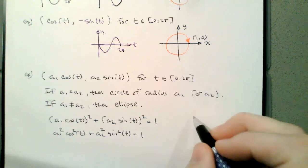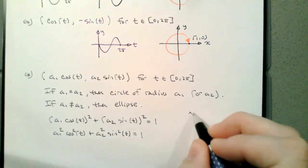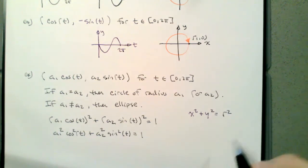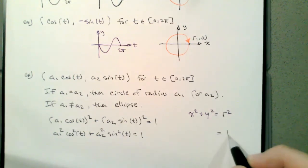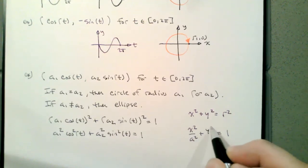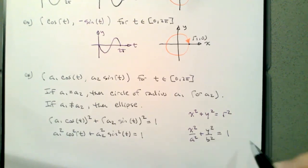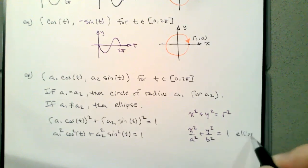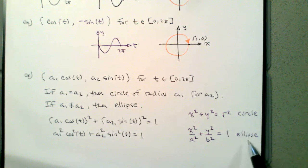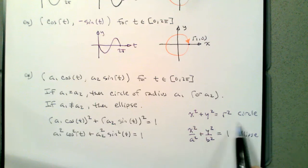A circle is x squared plus y squared equals r squared. For an ellipse, we're essentially dividing by the two radii. In a sense, a circle is a particular kind of ellipse where A and B are equal, because we could divide the circle equation by r squared.